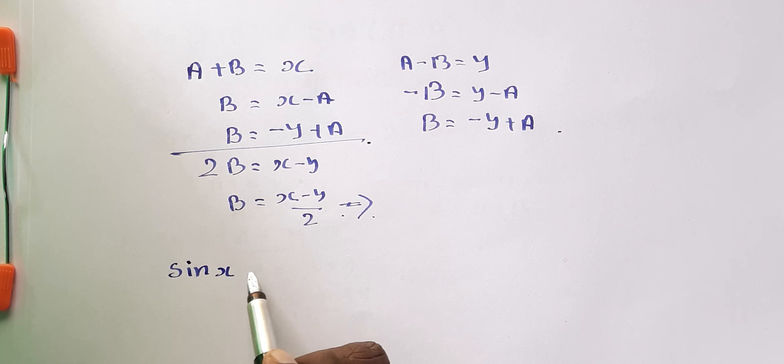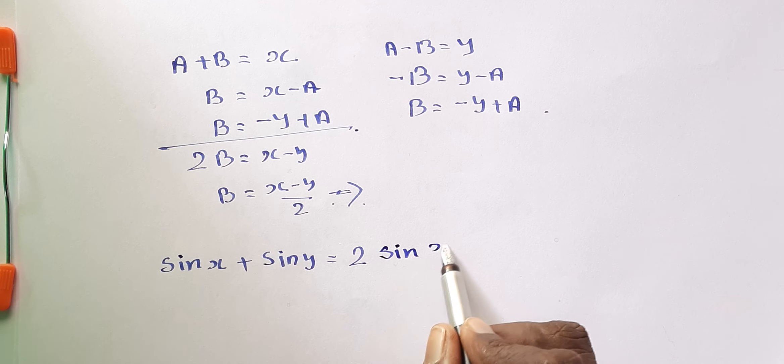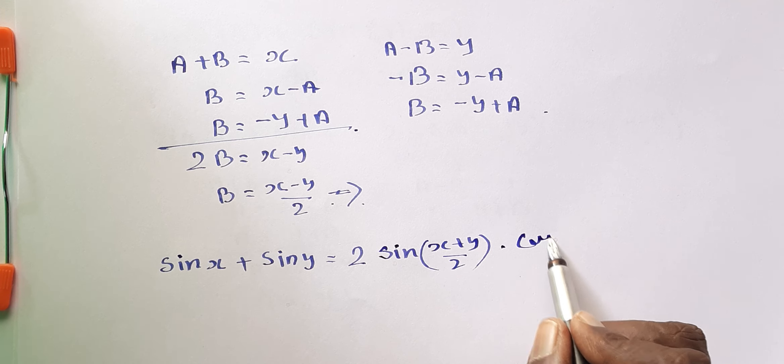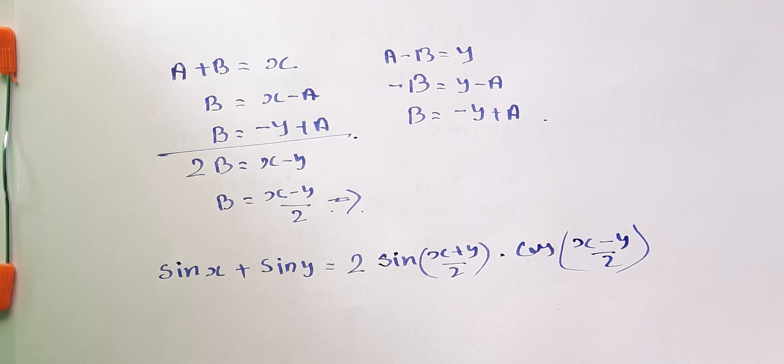So here, sin X plus sin Y is equal to what we're doing. 2 into sin A. A means here, X plus sin, sin X plus Y by 2, into cos B. B means here X minus Y by 2. That's all. If you have doubt, you may directly train with our experience. Thank you all.